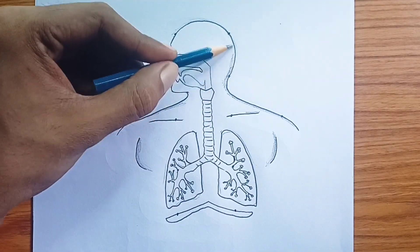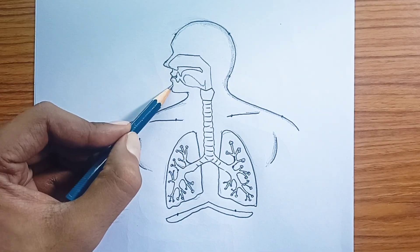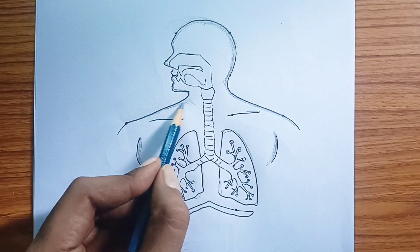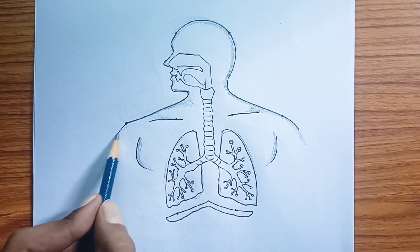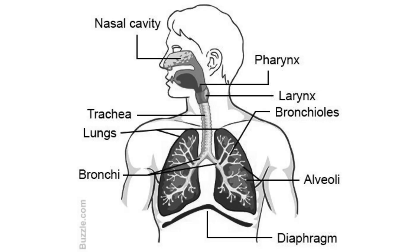In summary, the respiratory system is an intricate and vital system responsible for bringing oxygen into our bodies and removing carbon dioxide. It involves a pathway of tubes that conduct air to the alveoli in the lungs, where gas exchange occurs, all powered by the coordinated action of muscles like the diaphragm and rib muscles.